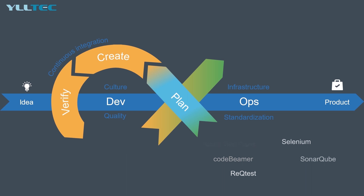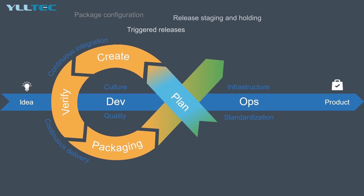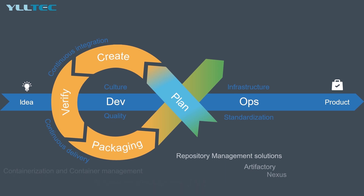Once we have tested and verified that our code is working, we move on to the packaging stage — also known by the continuous term continuous delivery. Packaging refers to the activities involved once the release is ready for deployment, often referred to as staging or pre-production. This includes tasks such as pre-approvals, packaging configuration, triggered release, release staging, and holding. Common disciplines include repository management and software asset management. Tools include Artifactory and Nexus, and container management solutions like OpenShift, Docker, and Kubernetes.